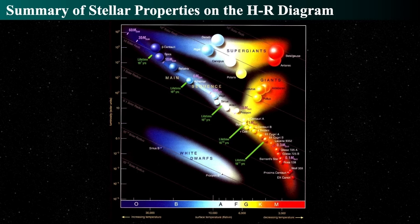There's an incredibly important element to the HR diagram, and that's the main sequence, where up to 80% of all the stars in the sky live. Giants, supergiants, and white dwarfs are the minority. Everything pretty much is on the main sequence. Let's see what the consequences of this observation are.